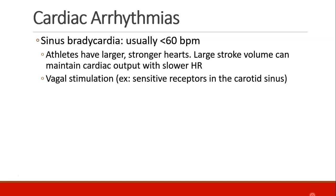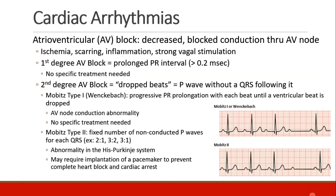The first is sinus bradycardia, usually less than 60 beats per minute. In some patients this is not abnormal — for example, athletes have larger, stronger hearts, and with their large stroke volume they can maintain cardiac output with a lower heart rate. Patients can also develop sinus bradycardia in response to vagal stimulation. Patients can have atrioventricular block, or AV block, which is decreased or blocked conduction through the AV node. This can happen as a result of ischemia, scarring, inflammation, or just a strong vagal stimulus.